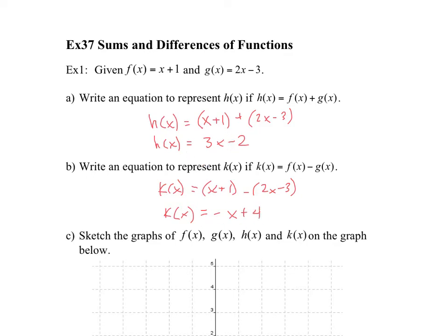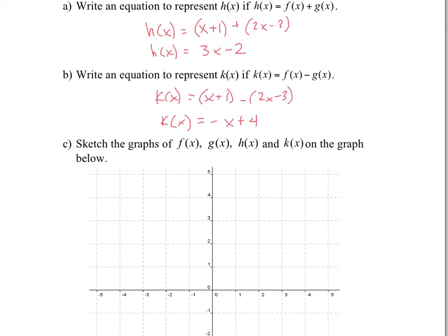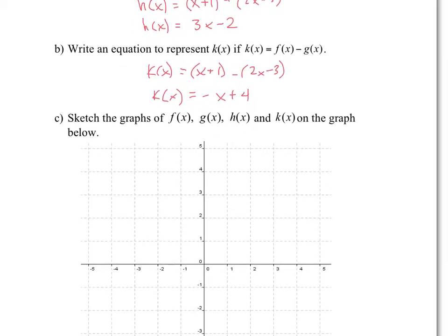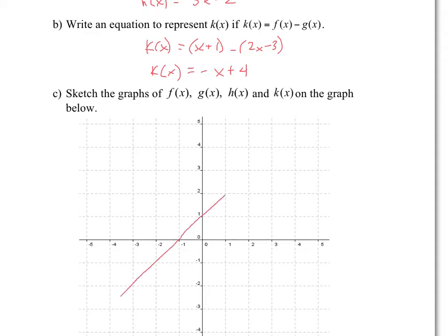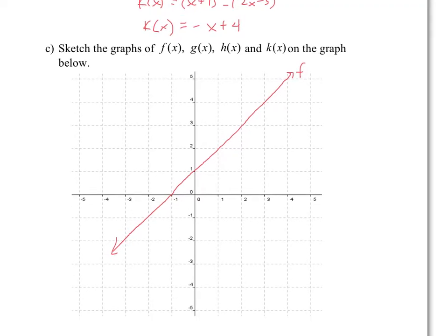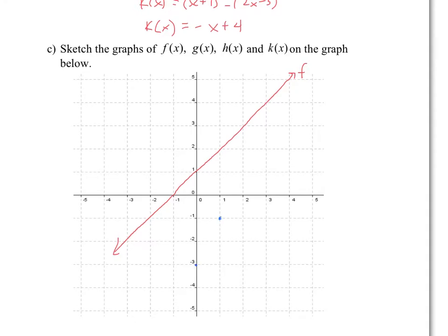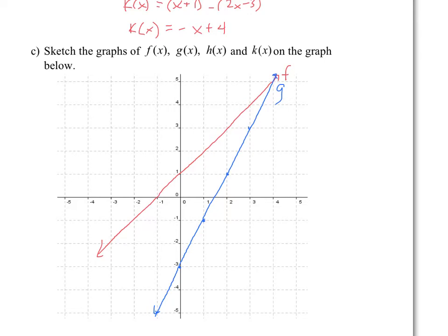So these create new functions. Sketch the graphs of f, g, h, and k on the graph. Let's start with f and g. So f is x plus 1 — that's simply this graph over here. This is our f function. Our g function is 2x minus 3, which passes by minus 3 and has a slope of 2 over 1. Now your h function is 3x minus 2, so minus 2 and your slope is 3 over 1. Basically, this graph is the sum of the y values.